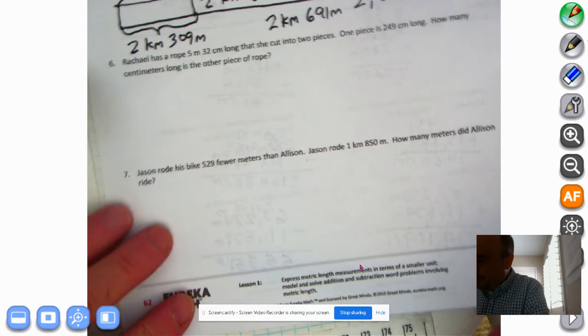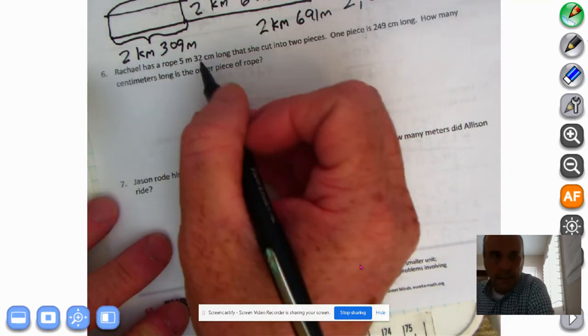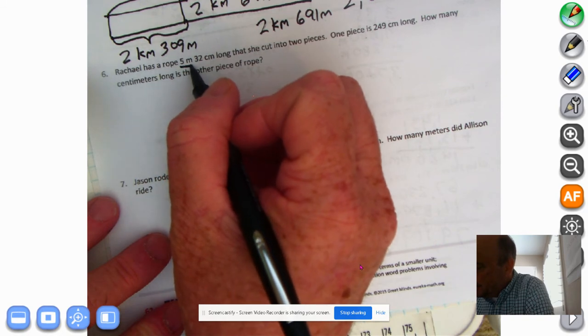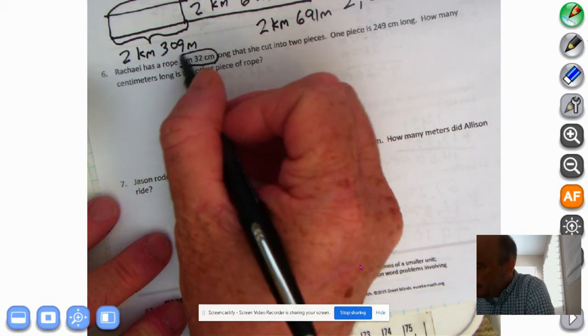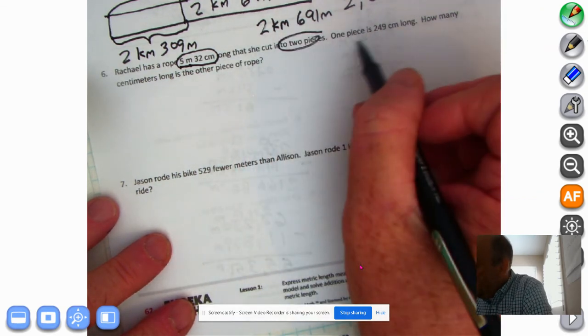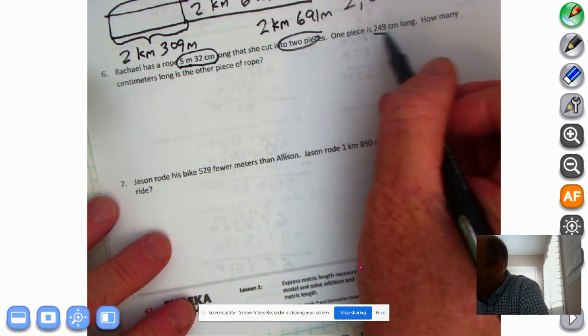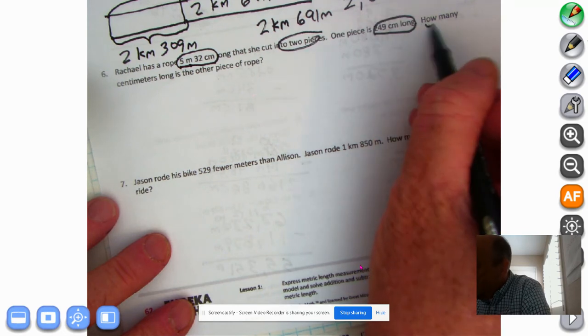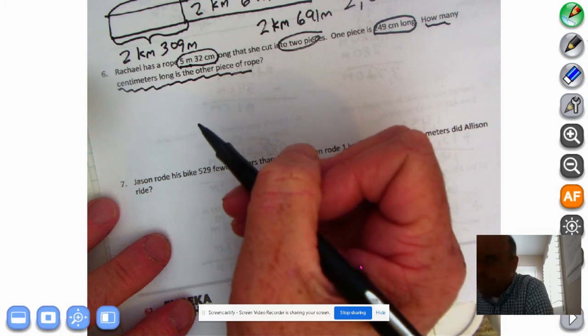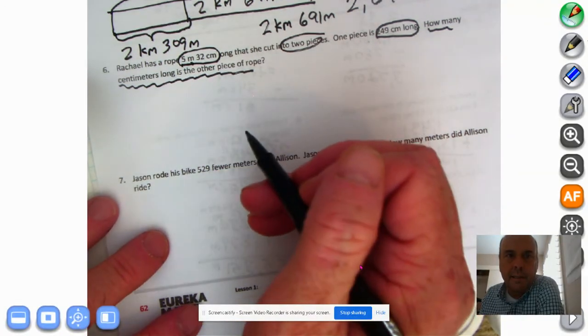We'll continue on. Rochelle has 5 meters, 32 centimeters of rope that's that long. That she cut into two pieces. One piece is 249 centimeters long. How many centimeters long is the other piece of rope?